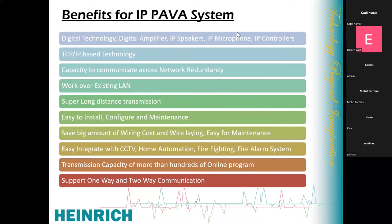Integration with CCTV, home automation, and fire alarm systems is also done over IP. We have an integration module that can be installed over IP. For example, for fire alarm integration, you don't need to run a cable from the fire alarm panel to the PA control room. You simply install our integration module over the network near your fire alarm panel and integrate from there. Integration with any third-party system — fire alarm, CCTV — just place our module on the network and you can make the integration.